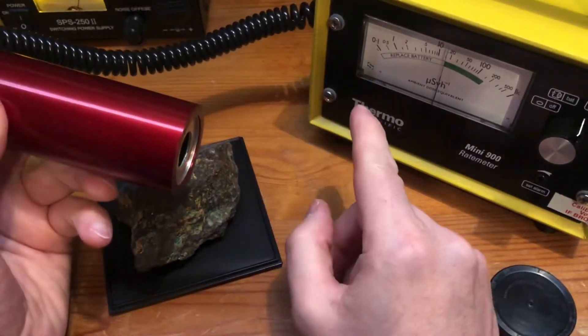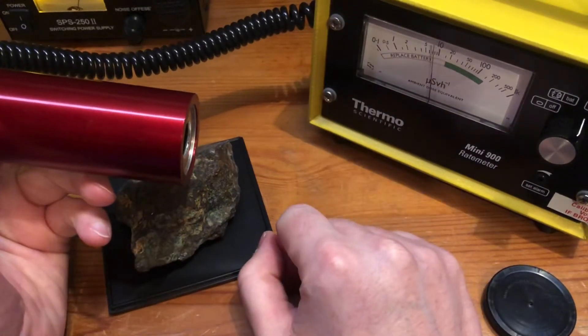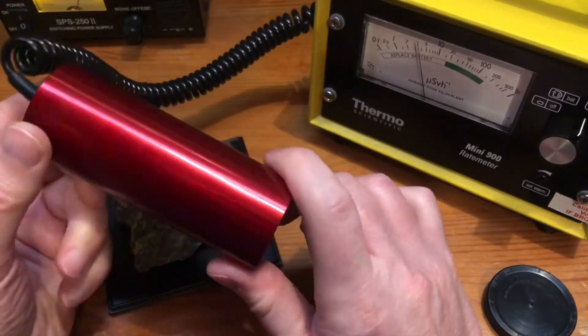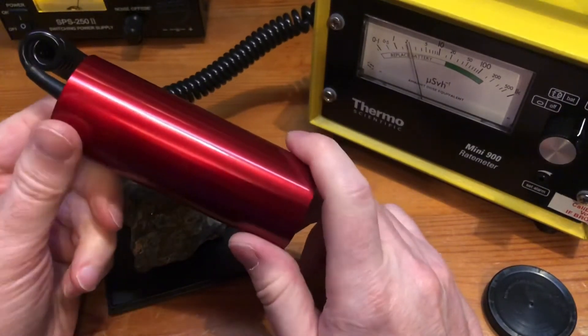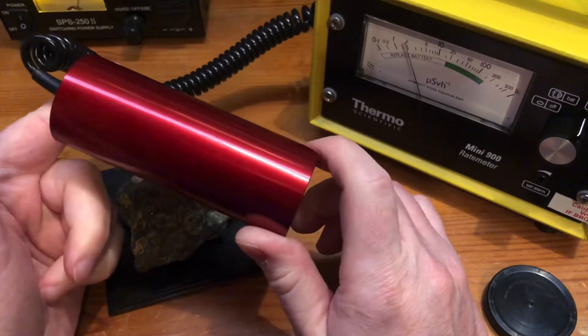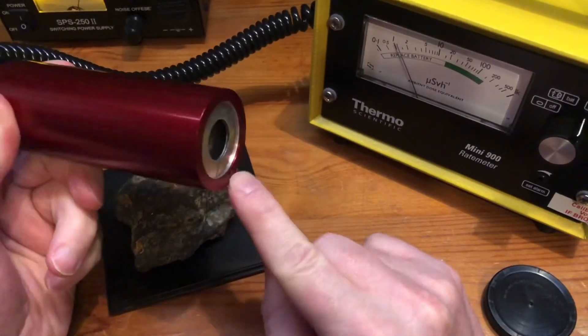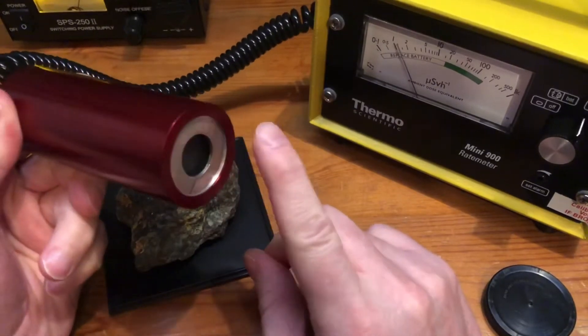I'm using a Thermo Scientific Milli-900 rate meter. This tube will detect alpha, soft and hard betas, and gamma. At the moment I have the beta shield off so it's picking up everything.